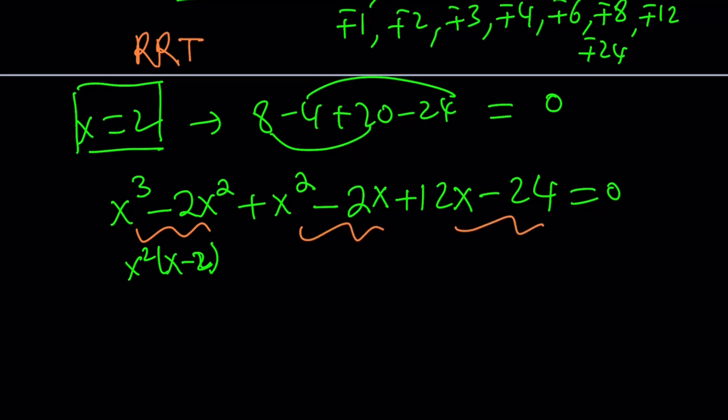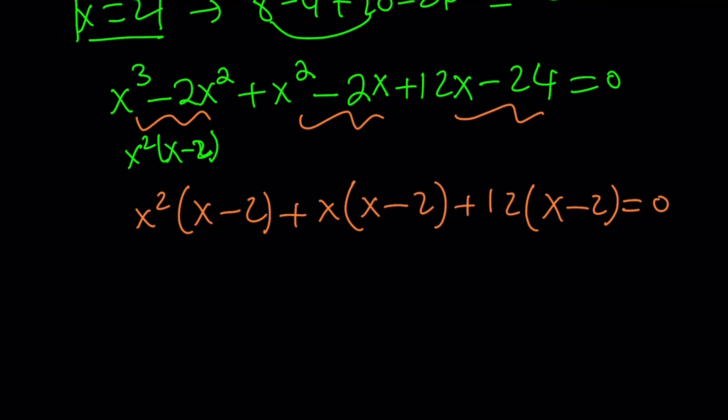If you take a look at each factor, you're going to get x squared times x minus 2, and then x times x minus 2, and finally 12 times x minus 2, and that's equal to 0. And then if you take out x minus 2, we do know that x equals 2 is a solution. But we can focus on the quadratic piece here, which gives us the following.